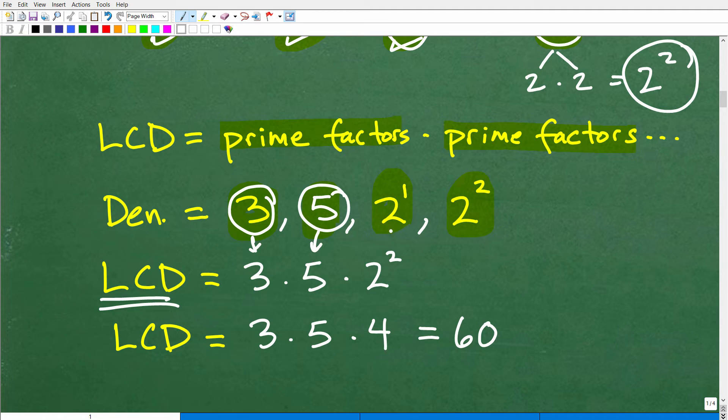And then here, we have a 2. This is 2 to the first, and here we have a 2 to the second. So, what do we do? Well, the deal is you always pick the highest power of that prime factor. So, this is 2 squared. This is 2 to the first. So, this wins out. So, we need a 2 squared represented. So, 2 squared, of course, is 4. So, now we have to figure out what 3 times 5 times 4 is. And when you do that lovely multiplication, it is 60.